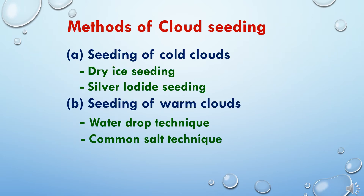Now to study the methods of cloud seeding. There are two methods. The first is seeding of cold clouds, which has two types: dry ice seeding and silver iodide seeding. The second method is seeding of warm clouds, which also has two types: the water drop technique and the common salt technique. We will now discuss each method in detail.